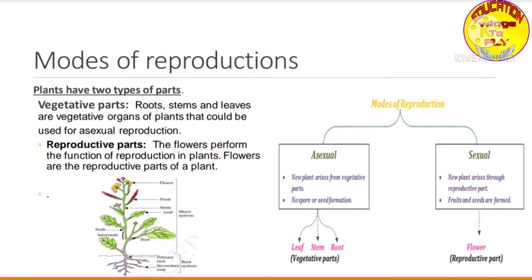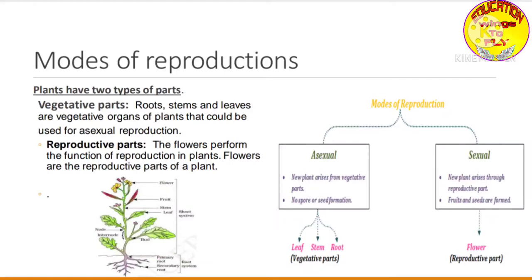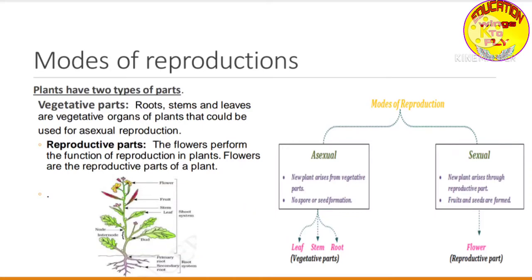One more important thing to know is that a plant has a root system and a shoot system. The shoot system includes all parts of the plant above the soil — flowers, leaves, stem, and fruits. The root system includes the part below the soil. So flowers, leaves, stem, and fruits all come under the shoot system, while roots come under the root system.